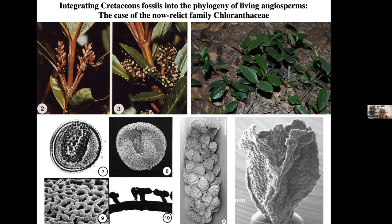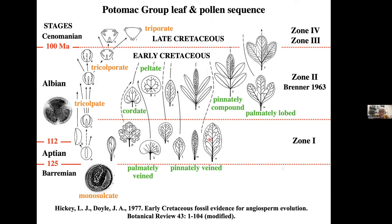This slide shows the last three stages of the early Cretaceous — the Barremian, Aptian, and Albian — and the Cenomanian, the first stage of the late Cretaceous. On the right are pollen zones in the Potomac Group of Maryland and Virginia. I began working on Potomac Group pollen as a student in the 1960s, then on leaves in the 1970s with Leo Hickey. We argued that the Cretaceous record provides evidence on the course of early angiosperm evolution and not simply immigration of already diverse taxa from some homeland area, as argued by Axelrod and others.